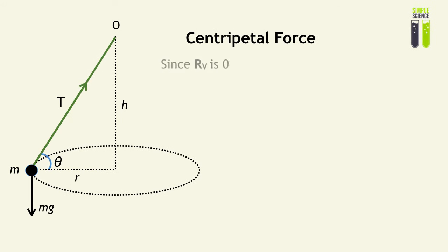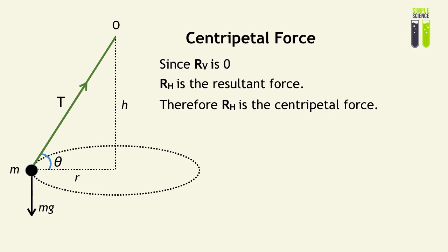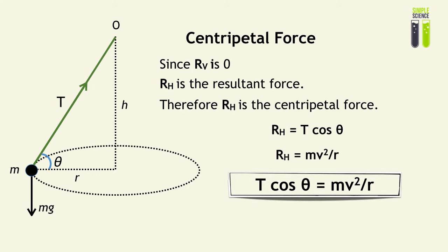When considering the horizontal component of the resultant force, we are considering the centripetal force. Since the vertical component of the resultant force is zero, the horizontal component of the resultant force provides the centripetal force. The resultant horizontal component is T cos θ, and since that is the centripetal force, it equals mv²/r. This gives us an equation relating mass, linear speed, and radius to tension and the angle in a conical pendulum.